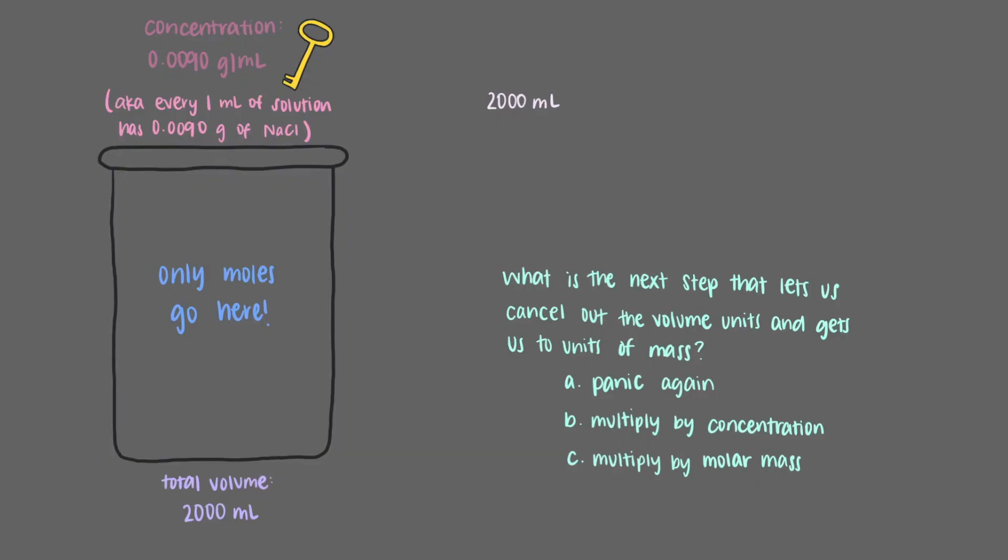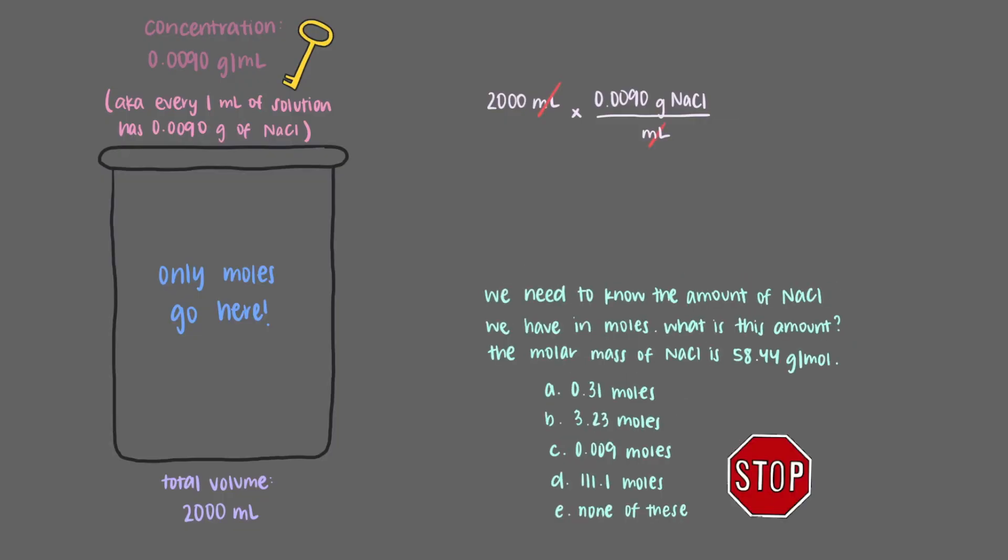Once we multiply 2,000 milliliters by the concentration in grams per milliliter, the milliliters cancel out and we are left with grams of sodium chloride. But we need to know the amount of sodium chloride we have in moles. What is this amount? The molar mass of sodium chloride is 58.44 grams per mole. That's right. By multiplying by the molar mass, we found that there are 0.31 moles of sodium chloride in a 2-liter saline drip.